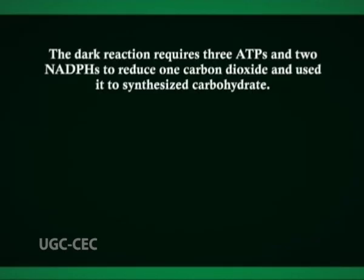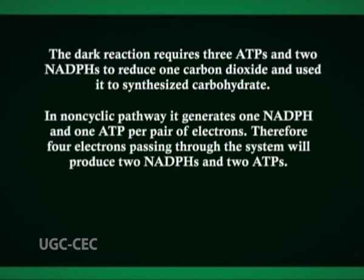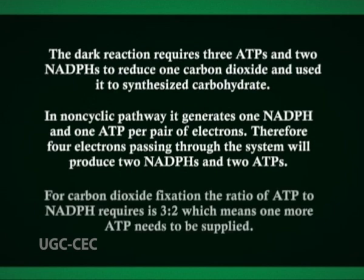The dark reaction requires three ATPs and two NADPH to reduce one carbon dioxide and synthesize carbohydrate. In the non-cyclic pathway, it generates one NADPH and one ATP per pair of electrons. Therefore, four electrons passing through the system will produce two NADPH and two ATPs. For carbon dioxide fixation, the ratio of ATP to NADPH required is 3:2, meaning one more ATP is needed. Hence, cyclic photophosphorylation operates independently to generate this extra ATP.